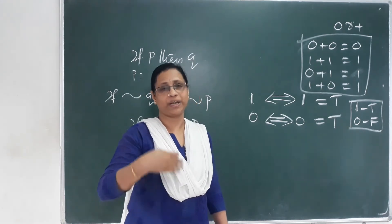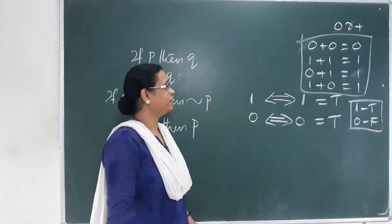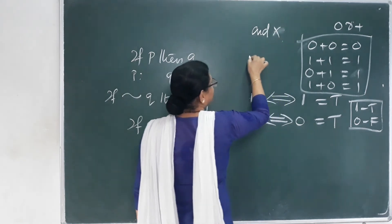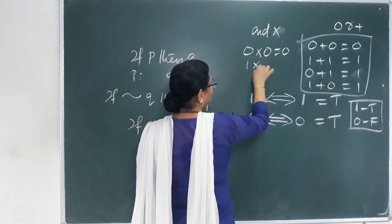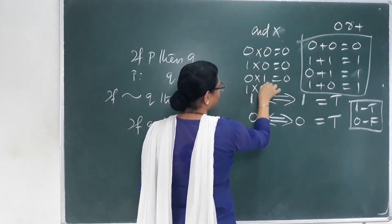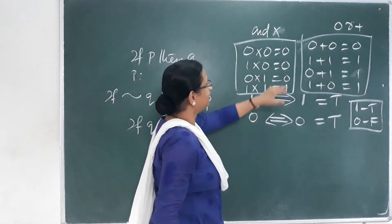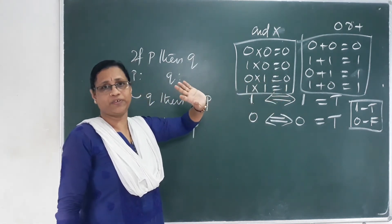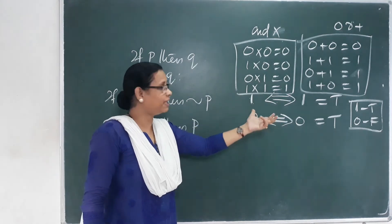When you call it an example, you call it a counter-example. Now, if we use multiplication: 0 into 0 is equal to 0, 1 into 0, 0 into 1, 1 into 1 — this is 1. In this condition, three conditions are false and one condition is true. That is why the first and second simple sentences being true is key.